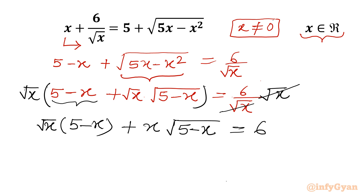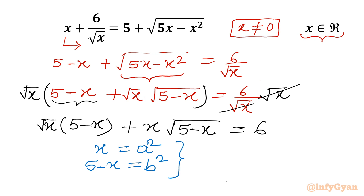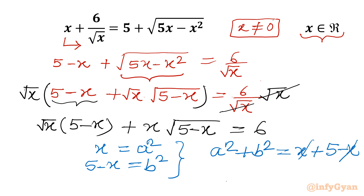Let us consider x = a² and 5 − x = b². One equation comes from the substitution itself: a² + b² = x + (5 − x), so the first equation is a² + b² = 5.